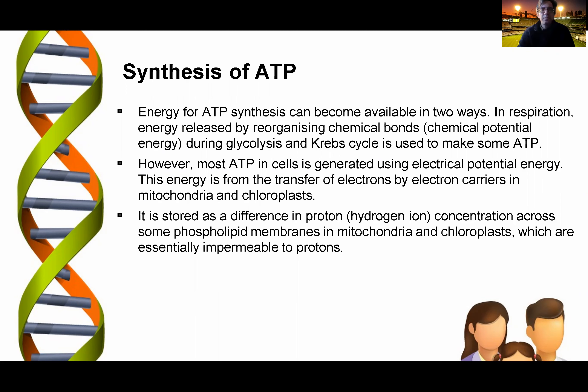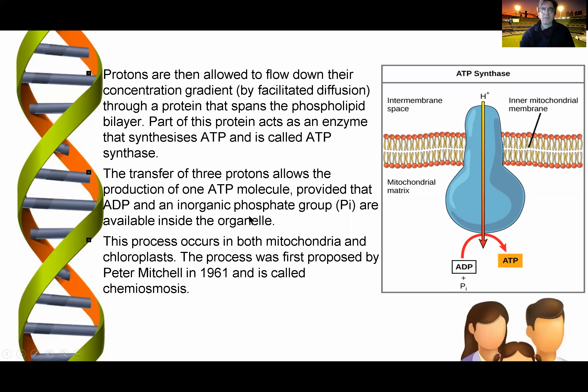In this reaction at the cell membrane, what happens is a proton gradient drives ATP synthase to cleave and form ATP. Protons flow down their concentration gradient through facilitated diffusion via a protein spanning the phospholipid bilayer. Part of this protein acts as an enzyme that synthesizes ATP — called ATP synthase. This occurs in the mitochondria, which are the energy factories of each cell. This was discovered by Peter Mitchell in 1961 and is called chemiosmosis.